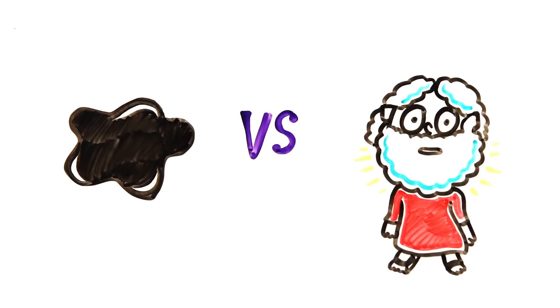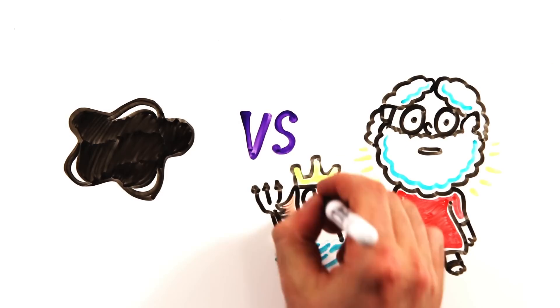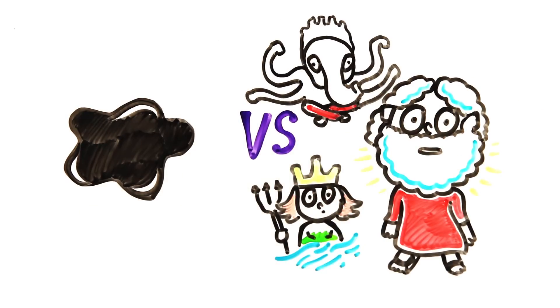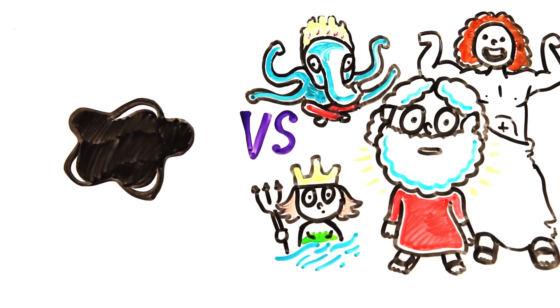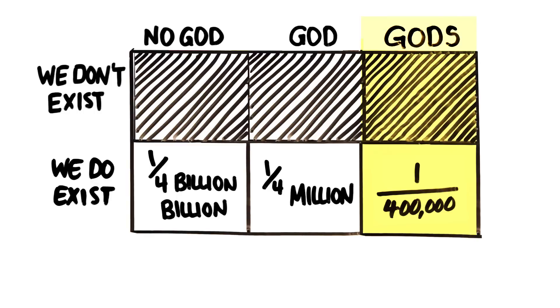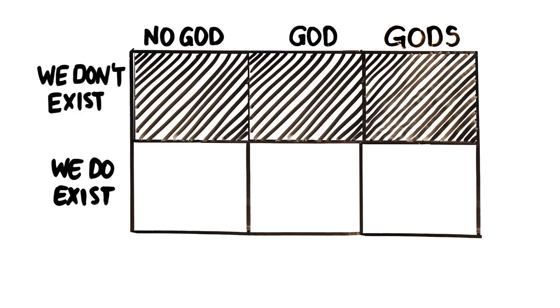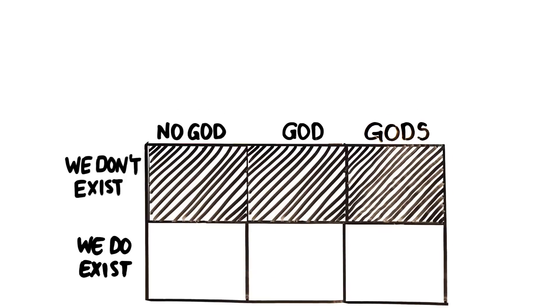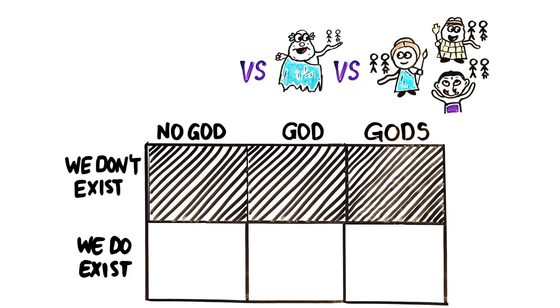And while this is true in some ways, it forgets an important point, that we have assumed there are only two major theories. But we know this isn't true. Many societies have believed in multiple gods, and given that there are some aspects of this life that aren't nearly as beautifully complex or seemingly intentional, perhaps a variety of squabbling gods created the world. Mathematician Jordan Ellenberg uses the probability of 1 in 400,000 that a universe with multiple gods would create humans.